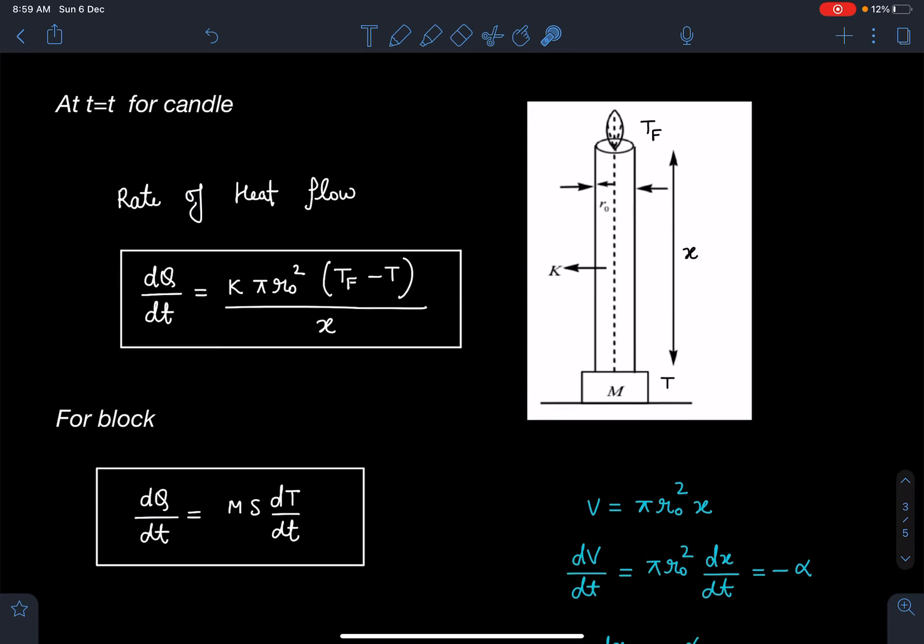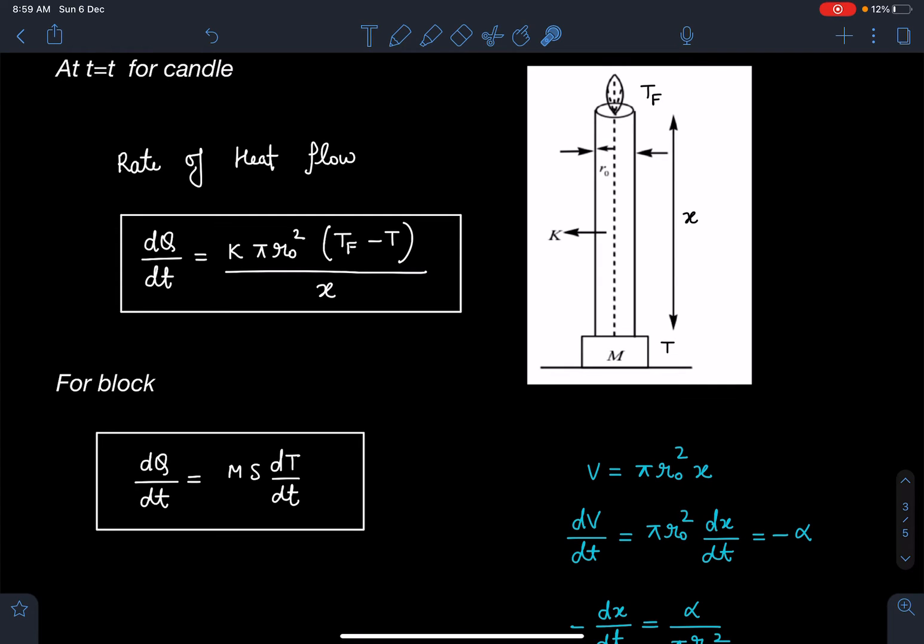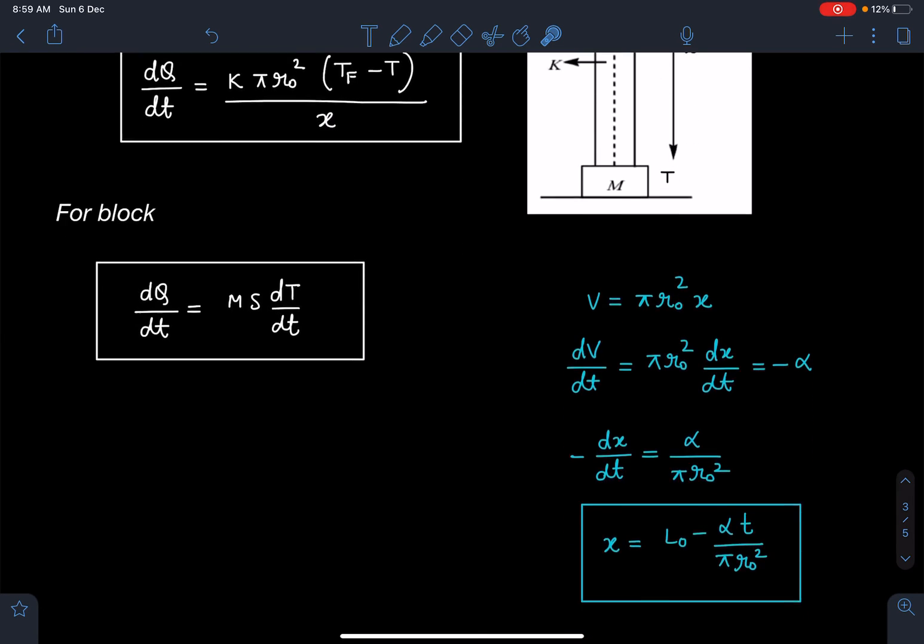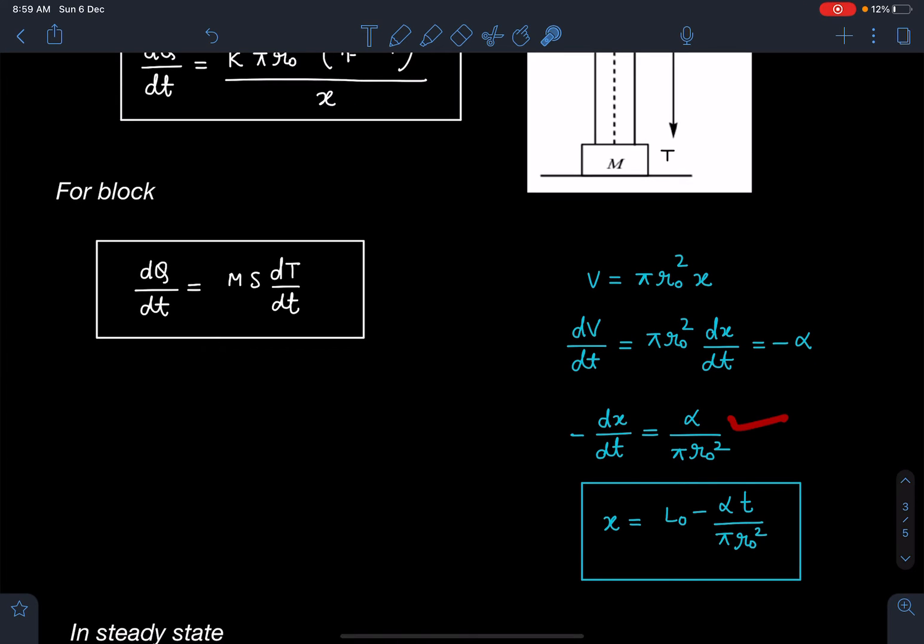Also the volume at any given instant I can write as πr₀²x. This dV/dt I can write as πr₀² dx/dt that is equal to minus α. This minus sign comes because volume is decreasing. From here I am going to get dx/dt and I can write the length of this candle as L₀ minus αt/πr₀².